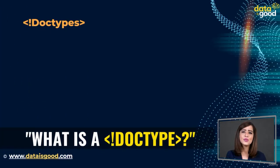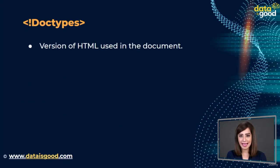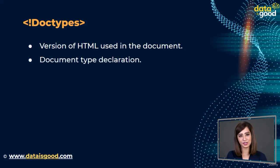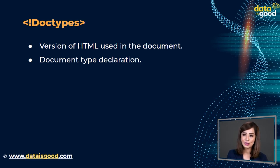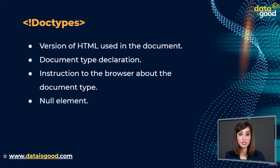Let's get started. What exactly is DOCTYPE HTML? The doc type tag is used to inform the browser about the versions of HTML used in the document. It is called the Document Type Declaration. All HTML documents must start with the doc type declaration. Technically, doc type is not a tag or element — it's just an instruction to the browser about the document type. It is a null element which does not contain a closing tag and must not include any content within it.